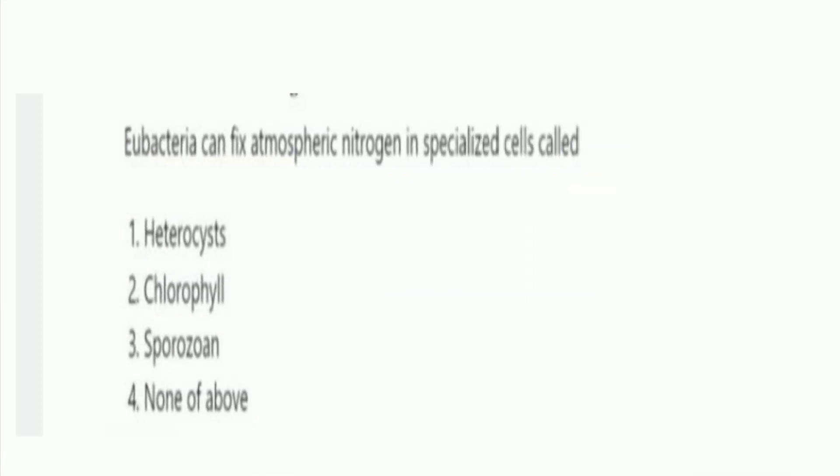Next question: blue-green bacteria can fix atmospheric nitrogen in specialized cells called? The options are heterocyst, chlorophyll, sporozoan, and none of the above. The right answer is option 1, heterocyst.